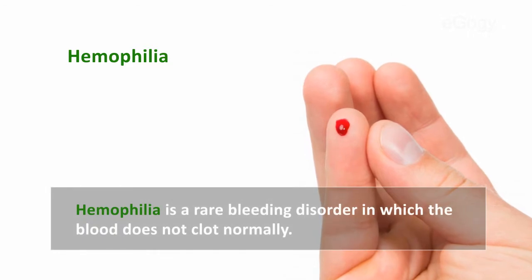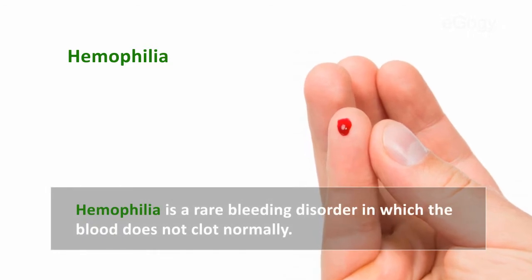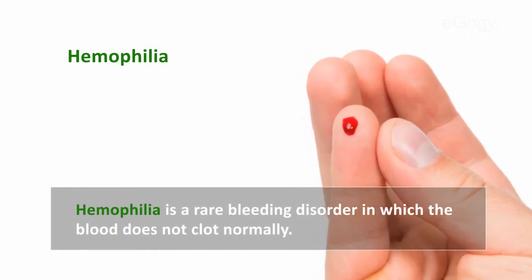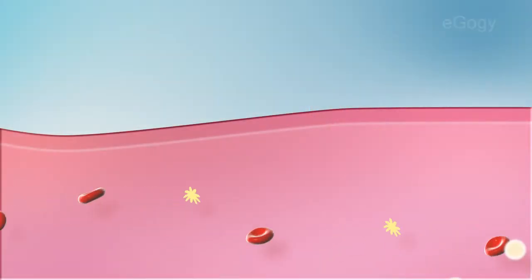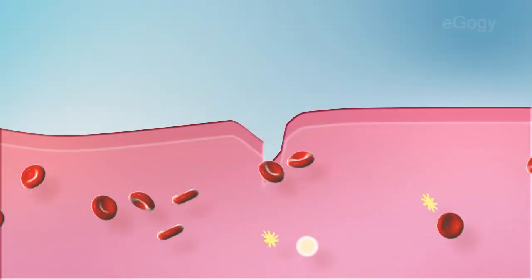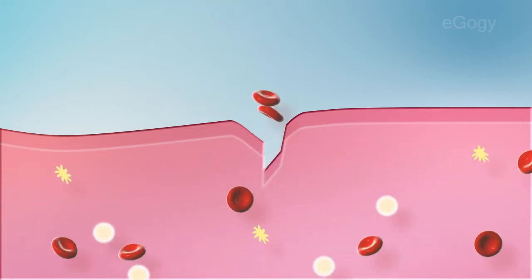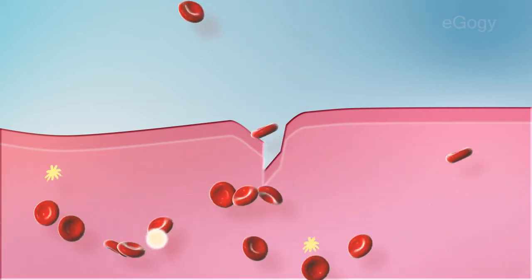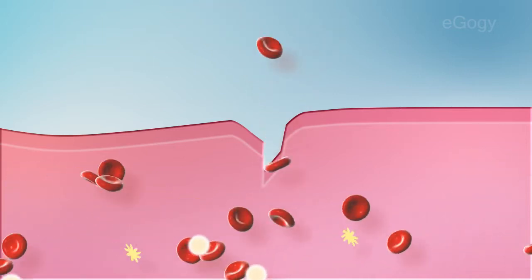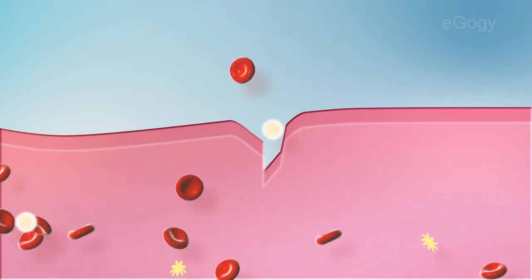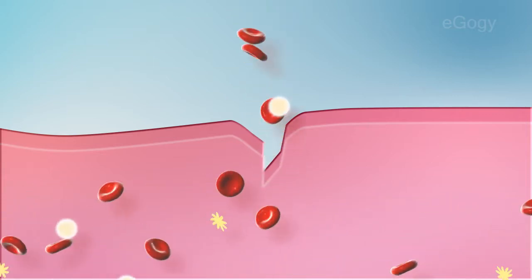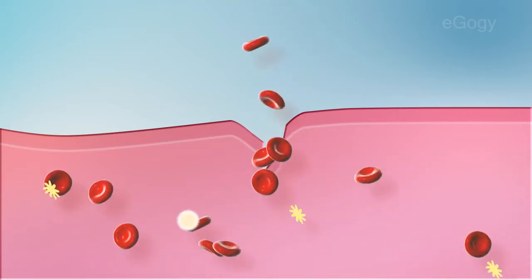Haemophilia is a rare bleeding disorder in which the blood does not clot normally. Even small wounds can cause severe blood loss that may lead to death. This disease is due to a gene mutation in the sex chromosome. It is also known by the name Royal Disease and Bleeder's Disease.